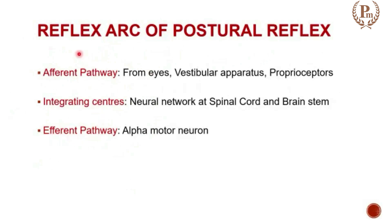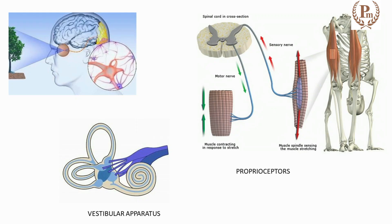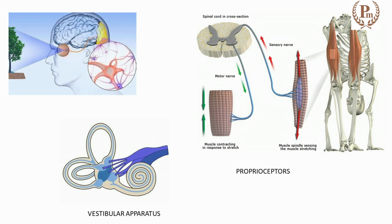For any posture, we know what the receptors are. The receptors are your proprioceptors. They can be muscle spindles, your Golgi tendon organs, the muscle sensors. Then for the muscle joint, we have the joints, the tendons, and the ligaments, who all are going to act as proprioceptors.